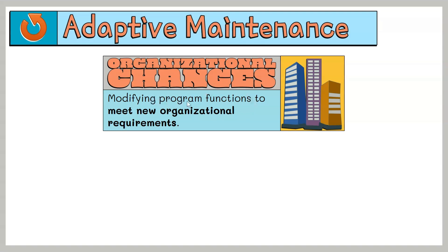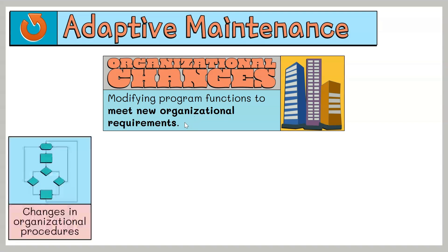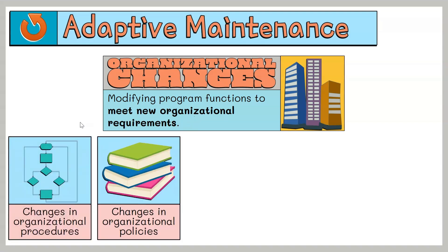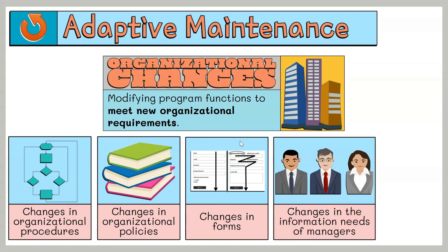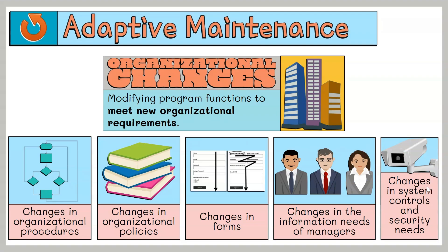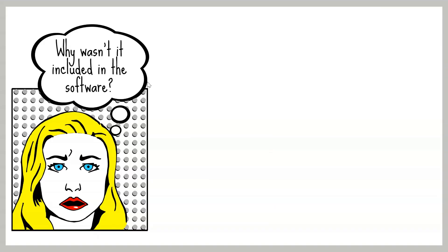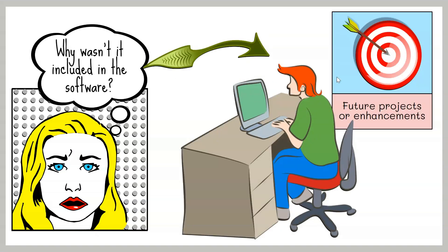Second, organizational changes — modifying program functions to meet new organizational requirements, which can include changes in organizational procedures, objectives, goals, policies, or rules, changes in forms, changes in the information needs of managers, and changes in system controls and security needs. As users interact with the software, they may notice things developers did not include or suggest new features they would like to see. These suggestions can lead to future projects or enhancements.